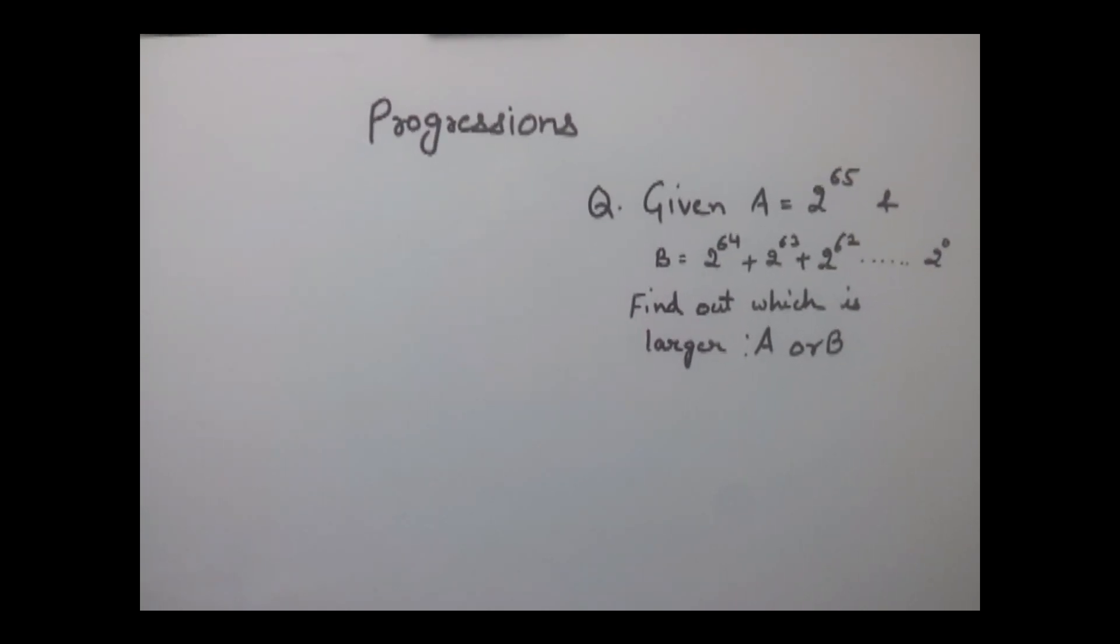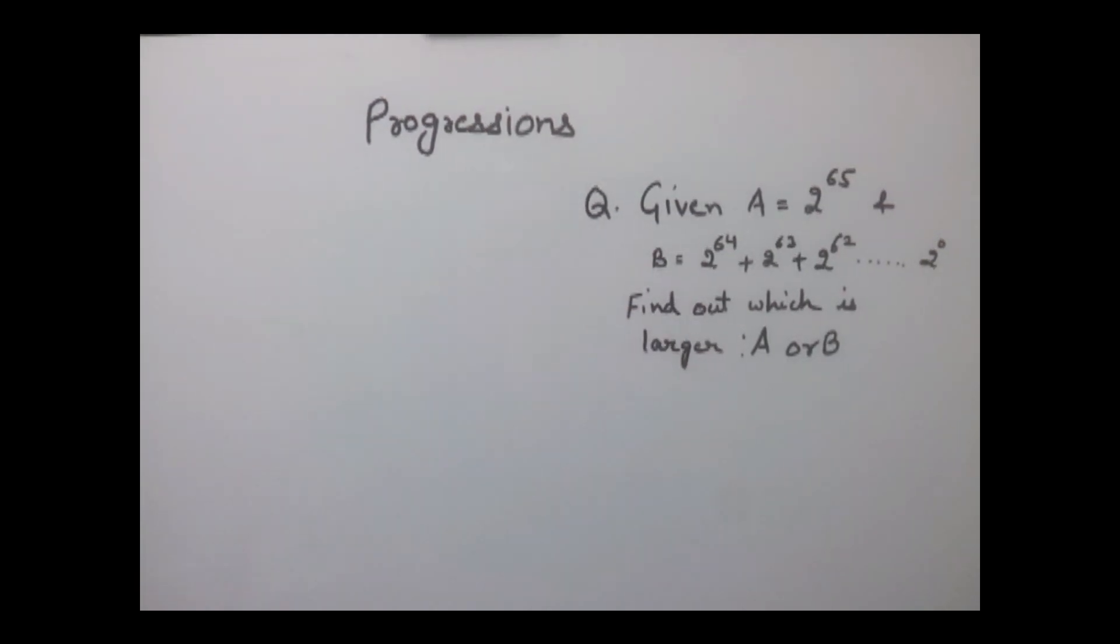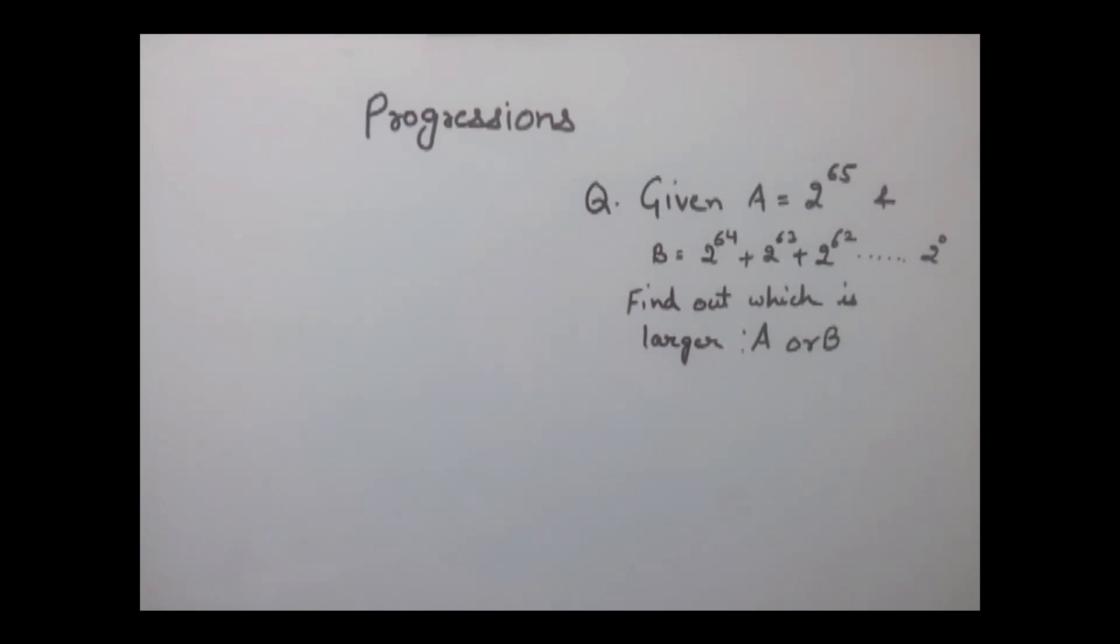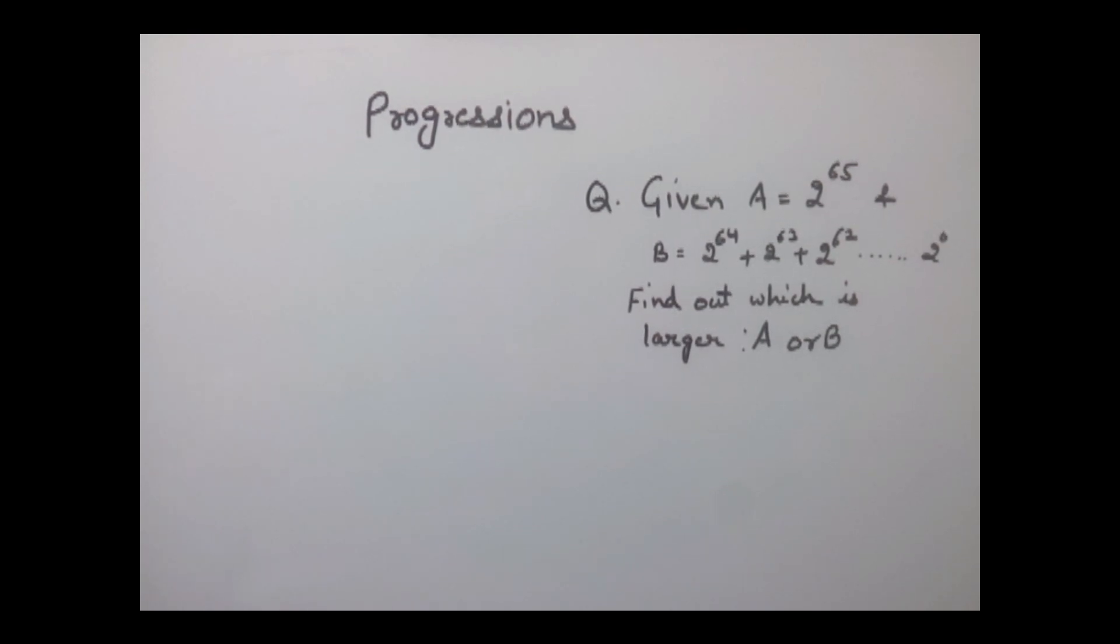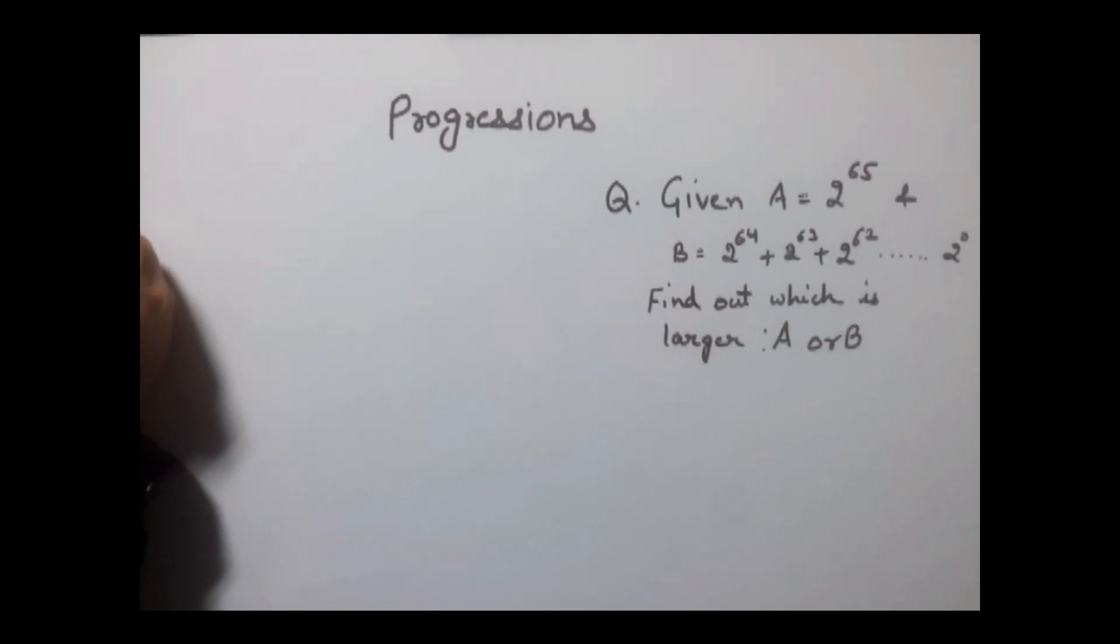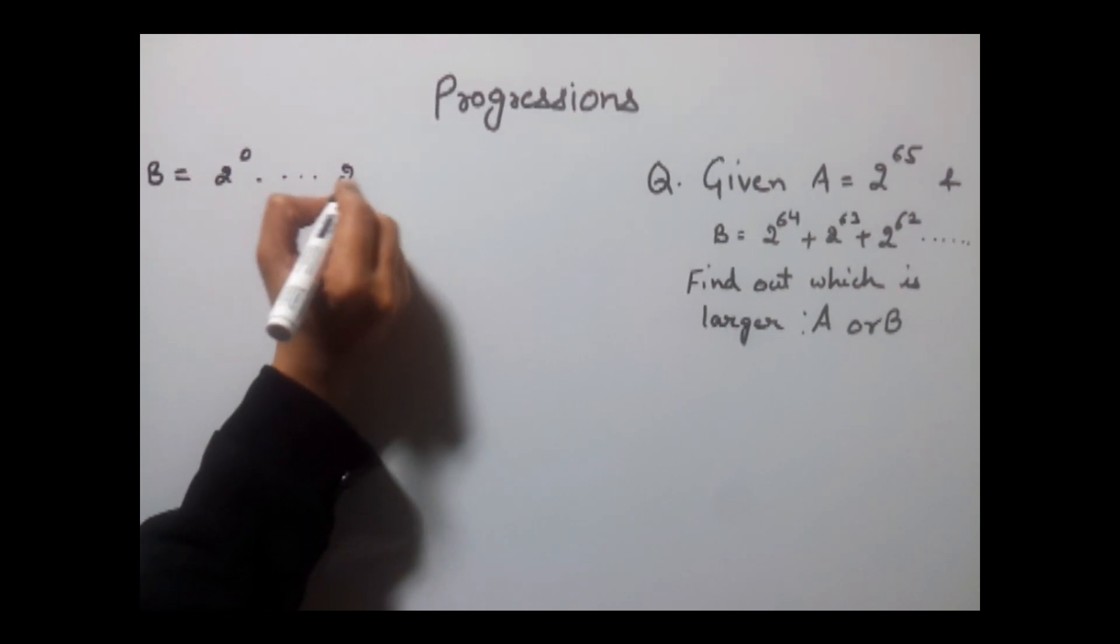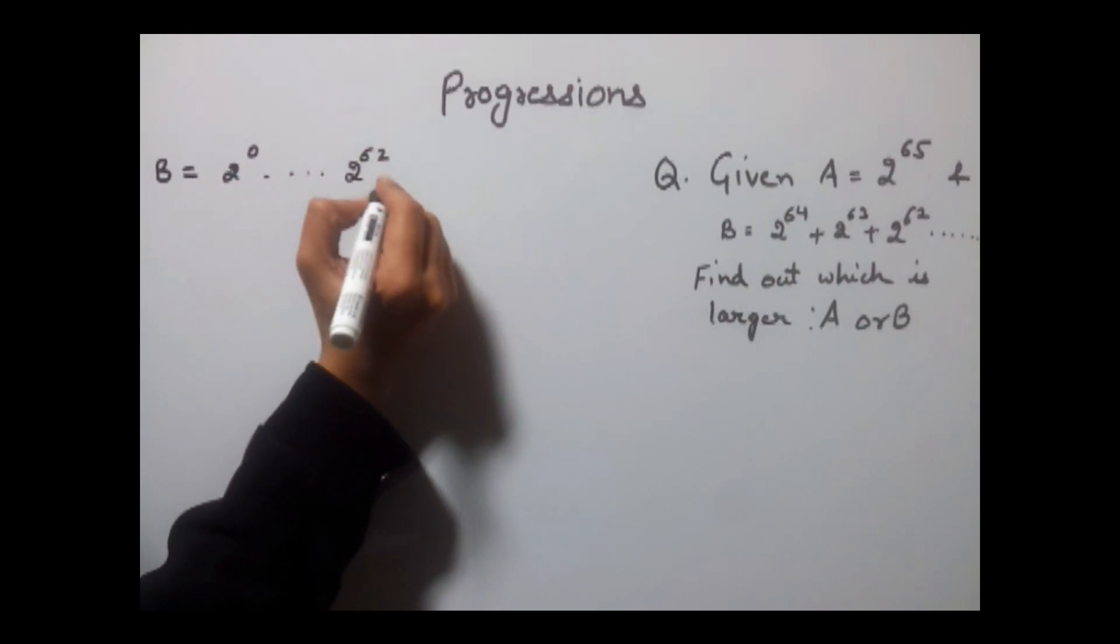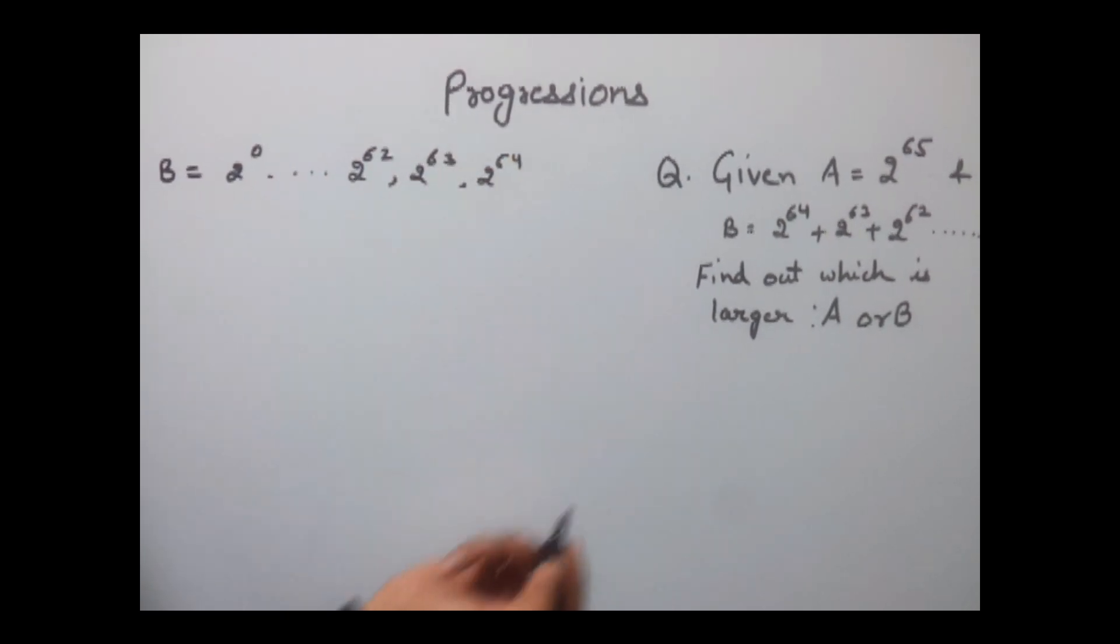Now in this question we need to find out whether A is larger or B is larger. For this we need to sum up all the terms given in B. We know that this is in GP because each term is multiplied by 2. This GP can also be written as 2 to the power 0, 2 to the power 62, 2 to the power 63, and 2 to the power 64.